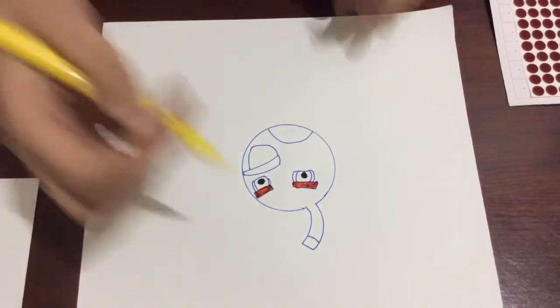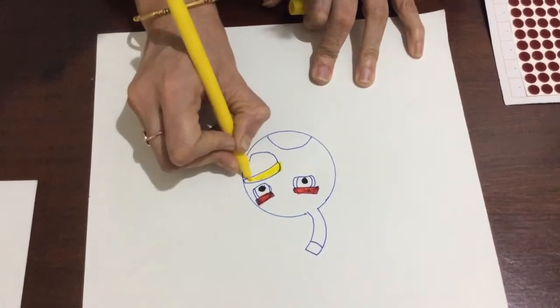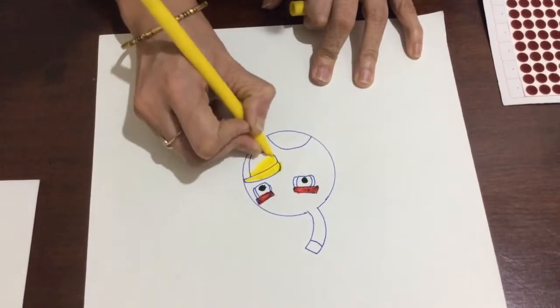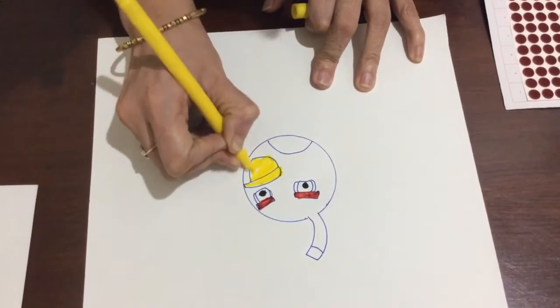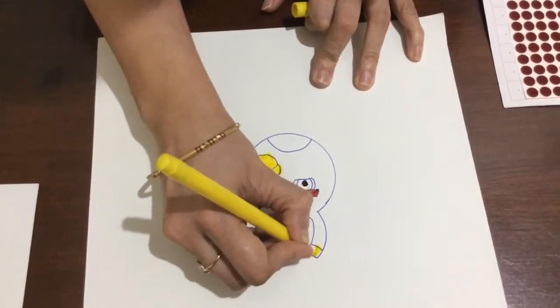The beak I will do yellow in the beak. All this coloring is also to be done by children only. And this portion also I will do yellow.